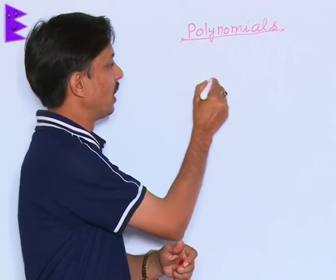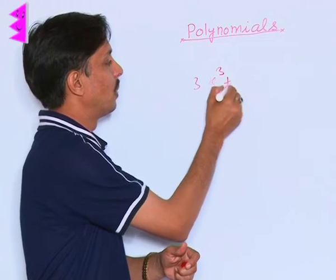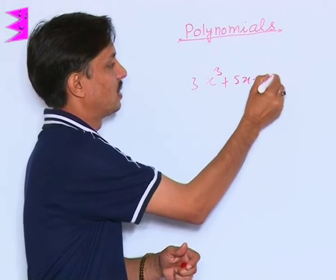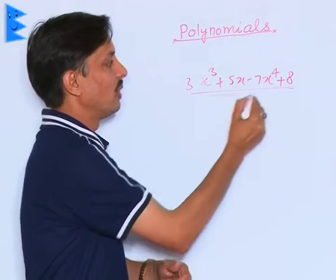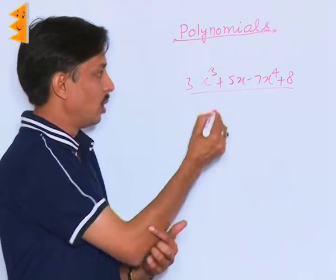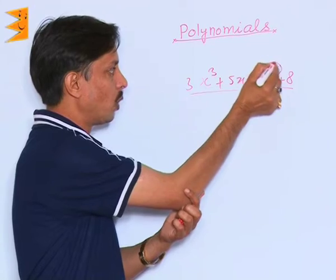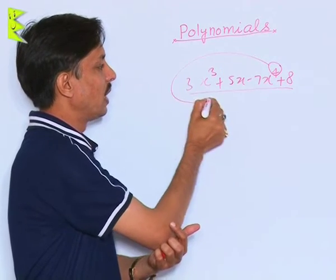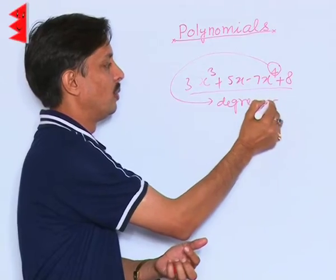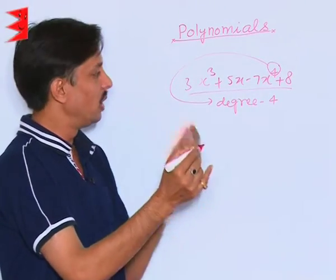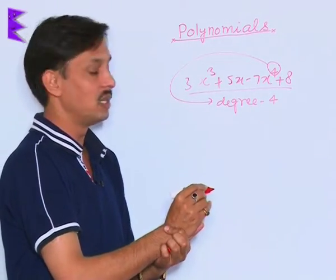If I write a polynomial like 3x³ + 5x - 7x⁴ + 8, this is a polynomial in x. Its degree is 4, reason being the highest power of this polynomial is 4. So the degree of this polynomial will be considered as 4.